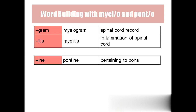'Myelogram' — 'myelo' means spinal cord and 'gram' means record, so a myelogram is a recording of the spinal cord. 'Myelitis' means inflammation of the spinal cord. For example, 'poliomyelitis' means inflammation of the grey matter of the spinal cord — 'polio' means grey matter.